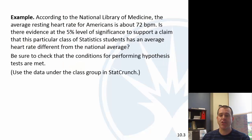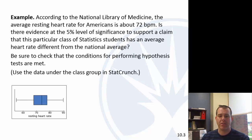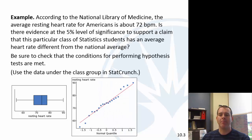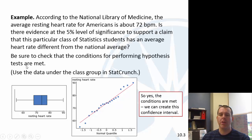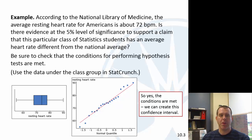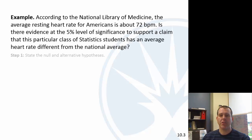Before we do the test, let's check the conditions. We need a boxplot and a QQ plot — I just did those already, so I'll show you here. The boxplot shows no outliers. And the QQ plot is pretty linear — a little bit extreme at the end, but we have some flexibility there. Pretty linear in the middle. So we can say this sample comes from a normally distributed population. Even though our sample size was about 16, less than 30, resting heart rates come from a normally distributed population. Conditions are met.